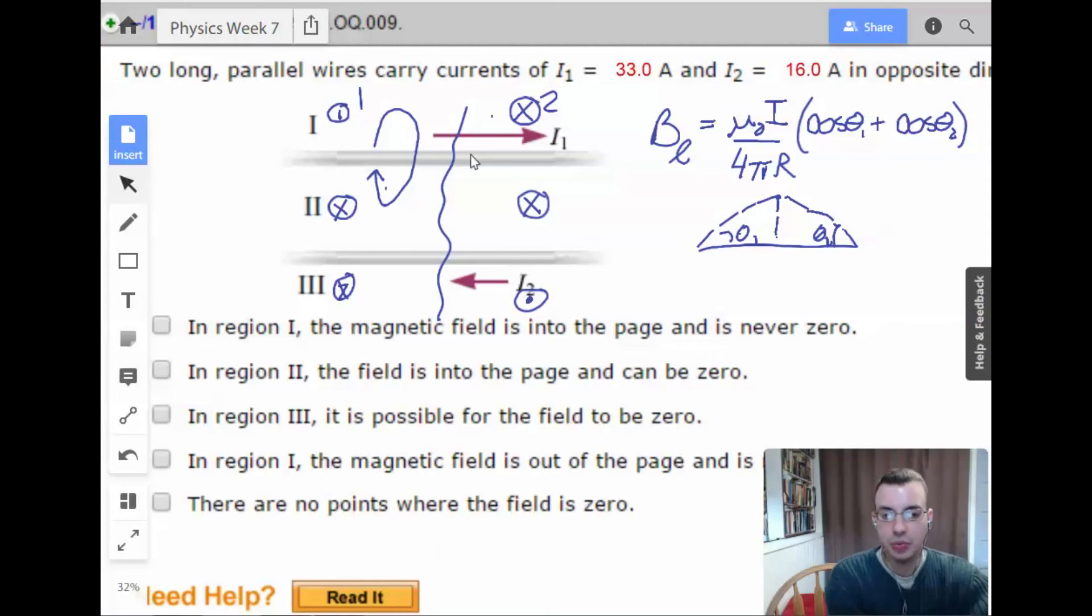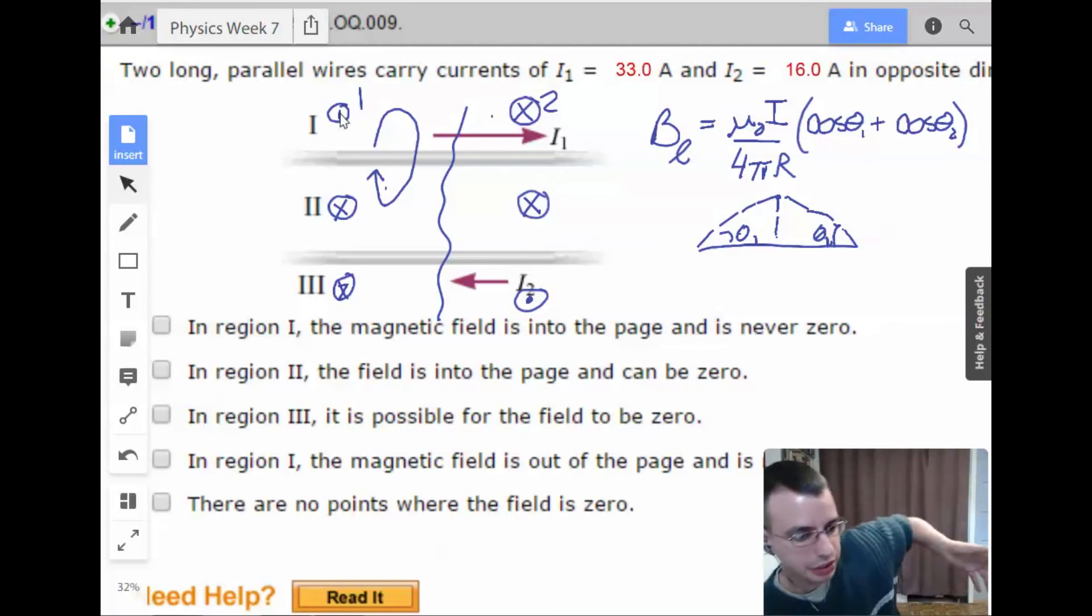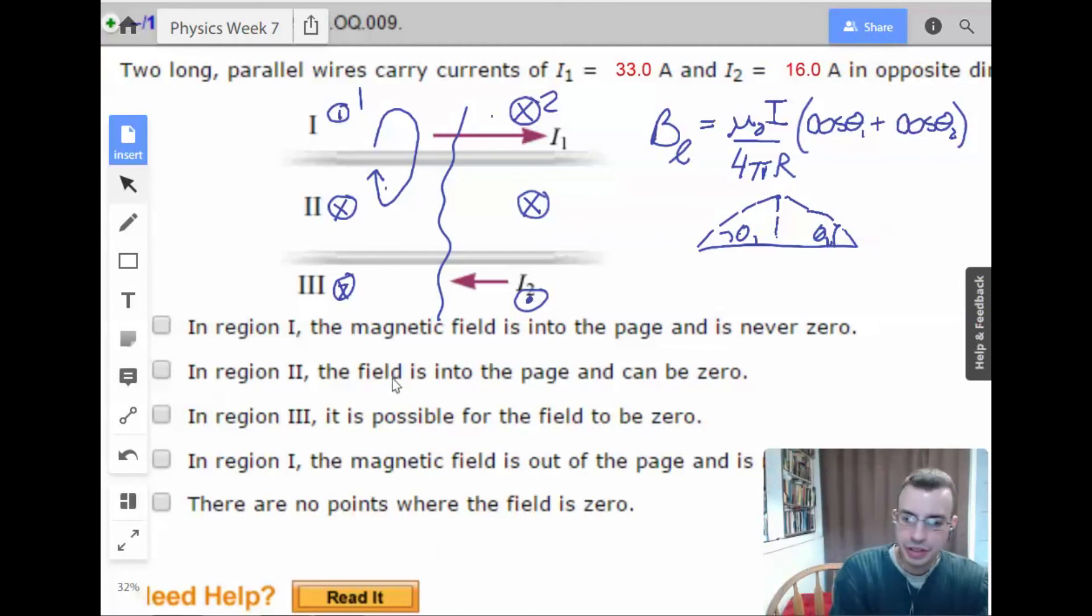So I1, or wire number one, will always dominate region one. And it's going to have a current coming out of the page because, yep, right hand rule, going to come out of the page at the top. So in region one, the magnetic field is into the page. No, that is false. That is, it's not always true, but it's always false.